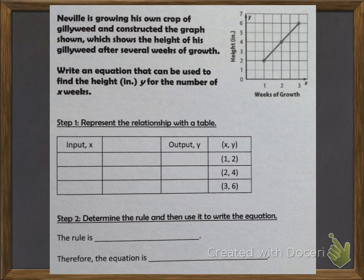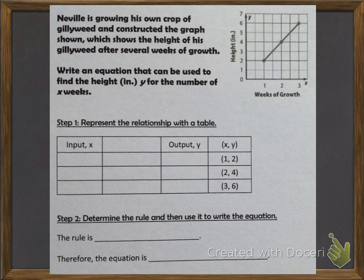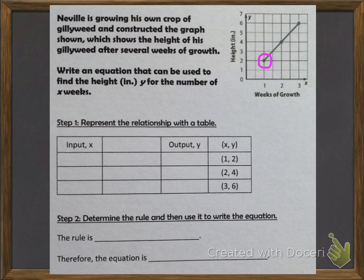Neville is growing his own crop of gillyweed and constructed the graph shown, which shows the height of his gillyweed after several weeks of growth. Write an equation that can be used to find the height in inches, y, for the number of x weeks. The first thing we need to do is represent the relationship with a table. I have my input column, process column, output column, and a column for the ordered pairs. The ordered pairs from the graph are (1, 2), (2, 4), and (3, 6).